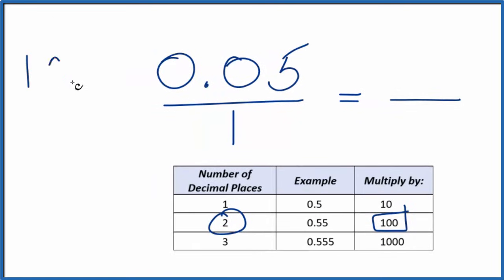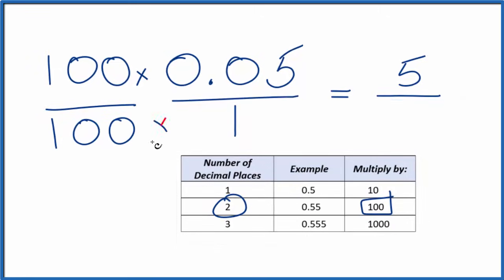So 100 times 0.05, that gives us 5. So we have a whole number here. The thing is, 5 is not equal to 0.05. So we have to multiply by 100 on the bottom as well. Think of it this way. 100 over 100, that's just 1. So we're only multiplying by 1. 100 times 1 is 100.